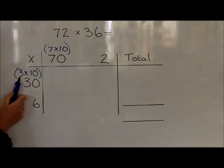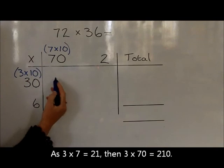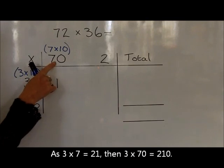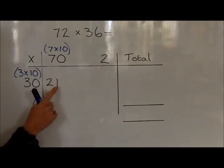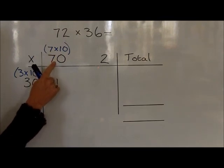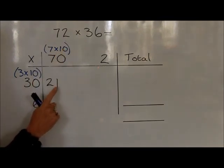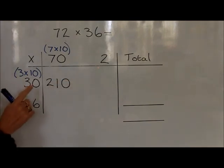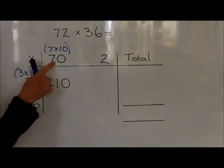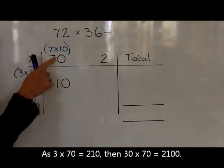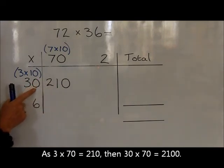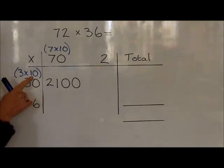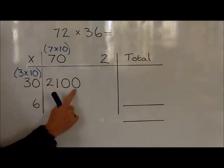We can start off with the fact that we know that three times seven is 21. We can now do that three times 70 is 210, because it is ten times bigger — seven becomes 70, which is ten times bigger, so the 21 becomes 210, which is also ten times bigger. Finally, we need to do 30 times 70. We know that three 70s are 210, so 30 70s are 2,100, which we had to make ten times bigger.